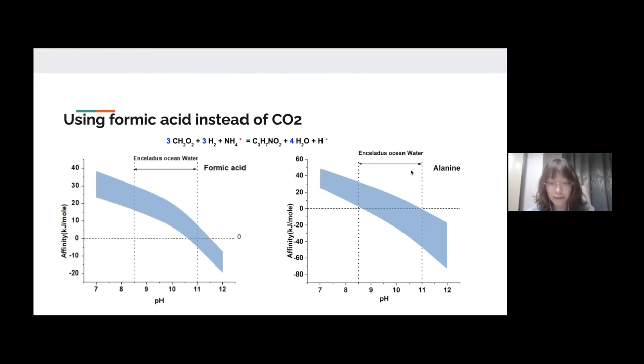Then we found that formic acid has a very high chemical affinity on Enceladus, which means that formic acid is very likely to exist. Formic acid is more active than carbon dioxide and may be more conducive to amino acid synthesis. Therefore, we calculated the affinity using formic acid as the source of carbon. The results are very exciting. For most amino acids, synthesis with formic acid has a greater affinity, which means that the reaction is more likely to occur than that with carbon dioxide.